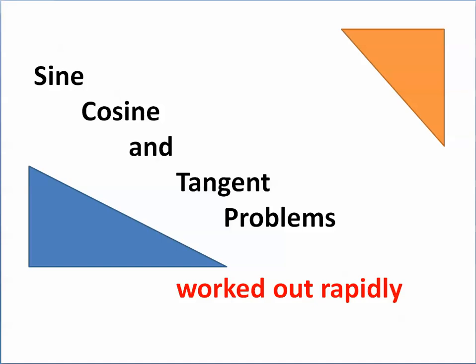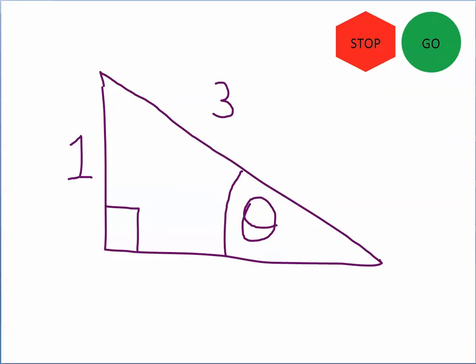Here we go. The way this works is I'll show you the problem. You can come up and click on the stop sign — that'll pause the video if you're watching this on YouTube. Then you try to work it out. After you've worked it out or become frustrated, you press on the go button here, and that'll start the video, and I'll show you the answer and the problem worked out. So press on the stop sign.